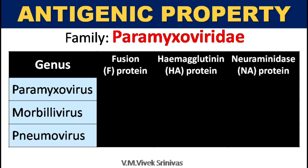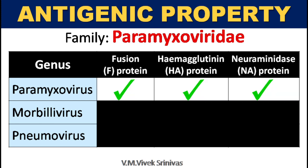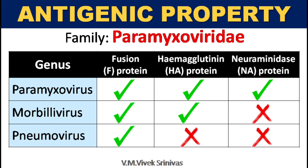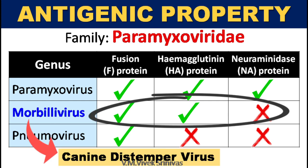Regarding antigenic properties among viruses in the Paramyxoviridae family: paramyxoviruses like Newcastle disease virus possess all three proteins — fusion protein, hemagglutinin, and neuraminidase. The genus Morbillivirus possesses two proteins: fusion protein and hemagglutinin. But Pneumovirus possesses only fusion protein. So, the canine distemper virus, which is under the genus Morbillivirus, possesses two proteins: fusion and hemagglutinin protein.